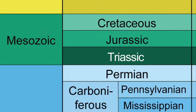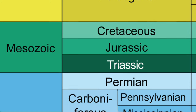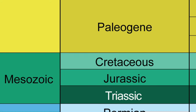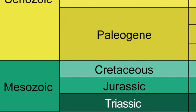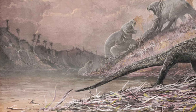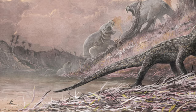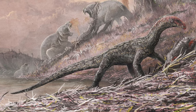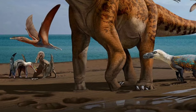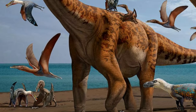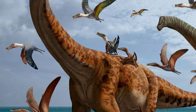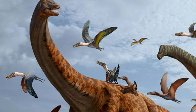The Triassic period is the seventh period of the Phanerozoic aeon and the first period of the Mesozoic era. It began around 252 million years ago and ended around 201 million years ago. It was preceded by the Permian period and followed by the Jurassic period. Sadly, despite its uniqueness, the Triassic is often overshadowed by the other periods of the Mesozoic era — the Jurassic and the Cretaceous periods.